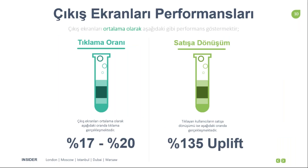Bu ekranların tıklama oranı %17 ile %20 arasında değişir. Bu, o sayfadan bounce işleminde bulunan kullanıcıların %17 ile %20'sini siteye döndürüp bounce oranını düşürebileceğiniz anlamına gelir. Ayrıca bu ekrana tıklayan kullanıcılar sitedeki ortalama konversiyon oranından %135 daha fazla uplift gösterirler. Yani hem bounce ve exit oranlarınızı düşürmüş, hem kullanıcının sitede geçirdiği süreyi ve ortalama sayfa sayısını artırmış, hem de satışa dönüşümde yüksek oranda uplift sağlamış oluyorsunuz. Kategori sayfaları için kesinlikle kullanmanızı önerdiğimiz bir çalışmadır.